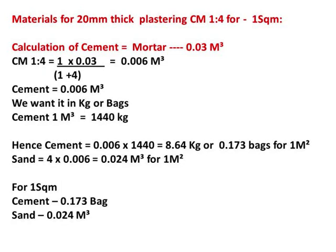The cement quantity is 0.006 cubic meters. Multiplying by 1440 kg/m³ gives 8.64 kg, or 0.173 bags per square meter. The breakup is cement 0.006 cubic meters and sand 0.024 cubic meters, which equals cement 0.173 bags and sand 0.024 cubic meters per square meter.